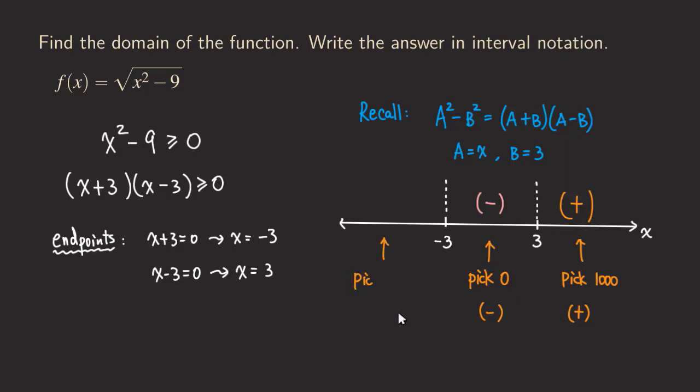And then do the same thing on the other side. So we are going to just pick negative 1000. You square the negative 1000, you're still going to get a positive big number subtracting the nine, then you are going to get the positive. So it would be positive here.